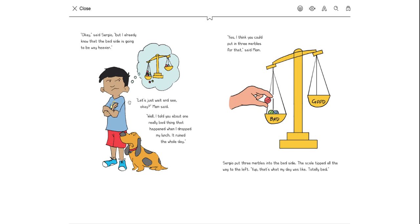Let's just wait and see. Okay, said mom. Well, I told you about the one really bad thing that happened when I dropped my lunch. It ruined my whole day. Yes, I think you could put in three marbles for that, said mom. Sergio put three marbles on the bad side. The scale tipped all the way to the left. Yep, that's the way my day was like. Totally bad.